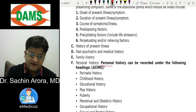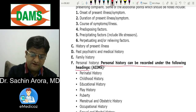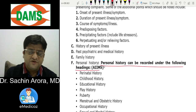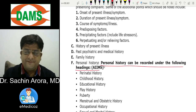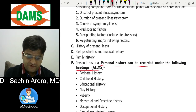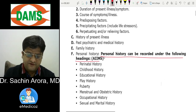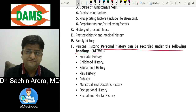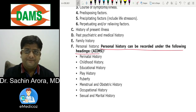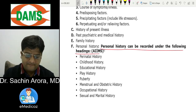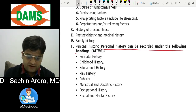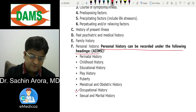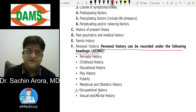Another AIIMS exam question: 'Psychiatric personal history includes all except?' Options were marital history, occupational history, and food preferences. The answer was food preferences — marital history and occupational history are important components, but food preferences are not part of psychiatric personal history.